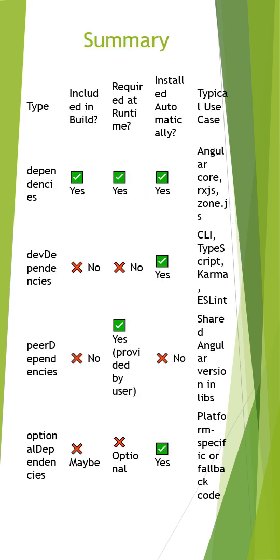Here I summarized when to use which dependency — which is included in build, which is required at runtime, which is installed automatically, and what the cases are. Dependencies are very important; they are used at both build time and runtime. Other dependency types depend upon the requirements.